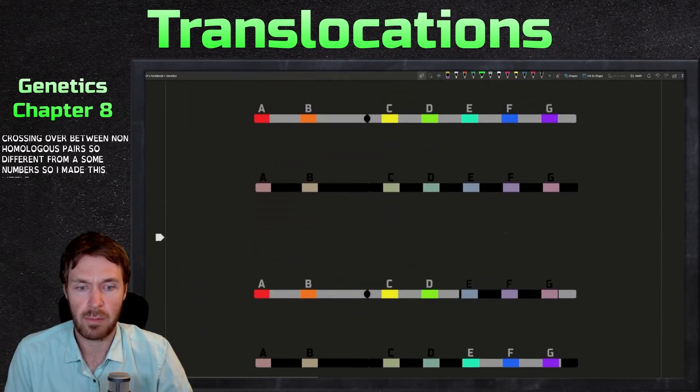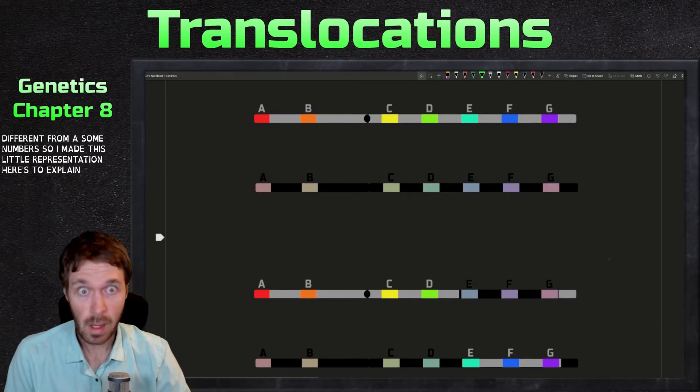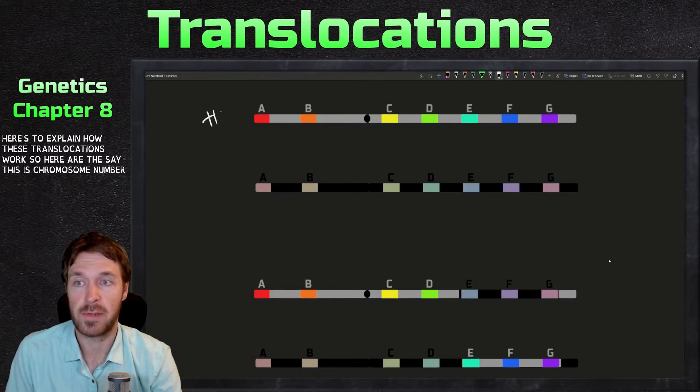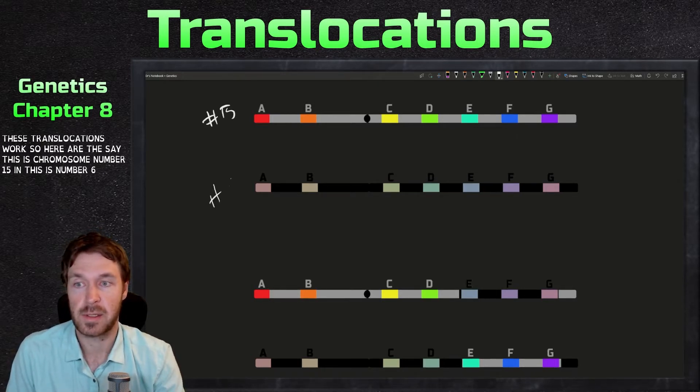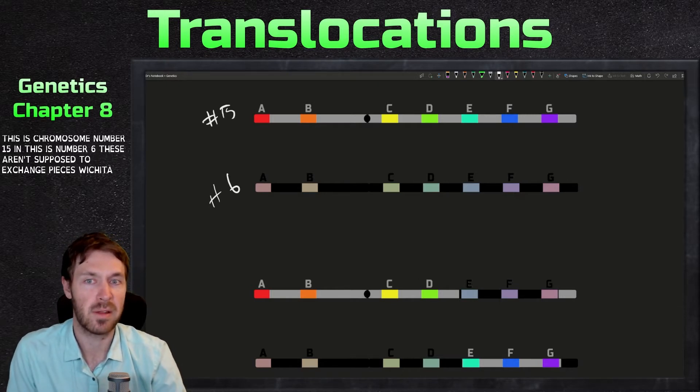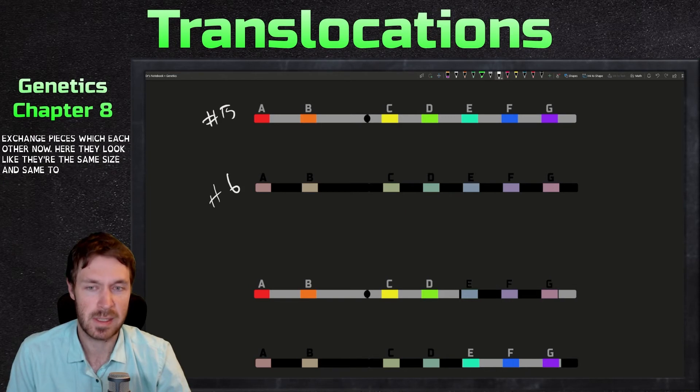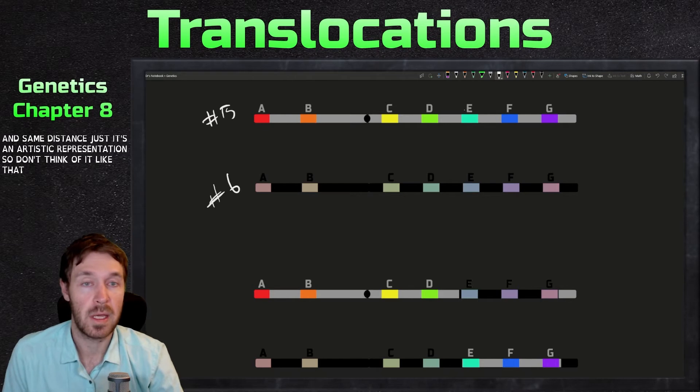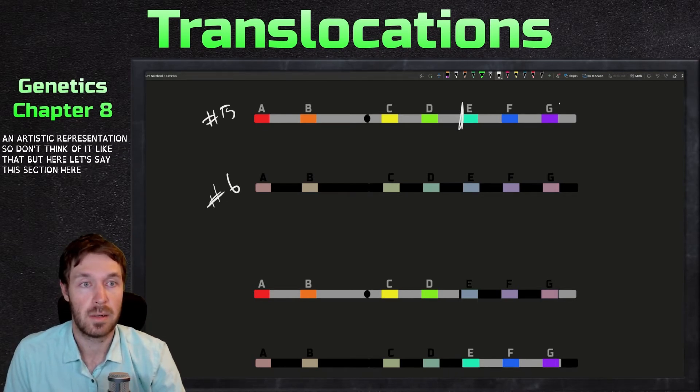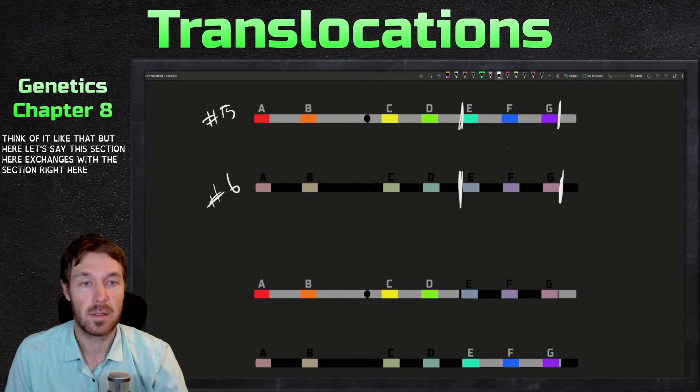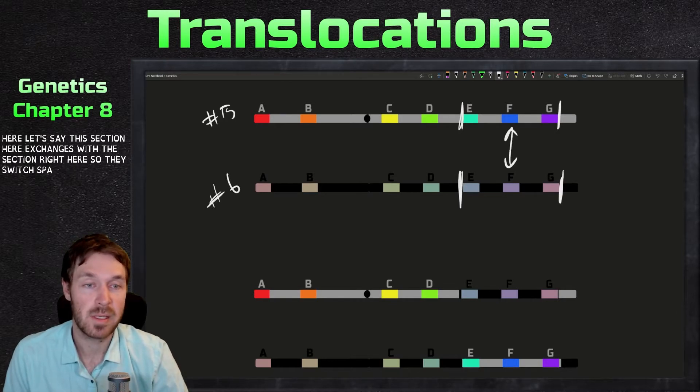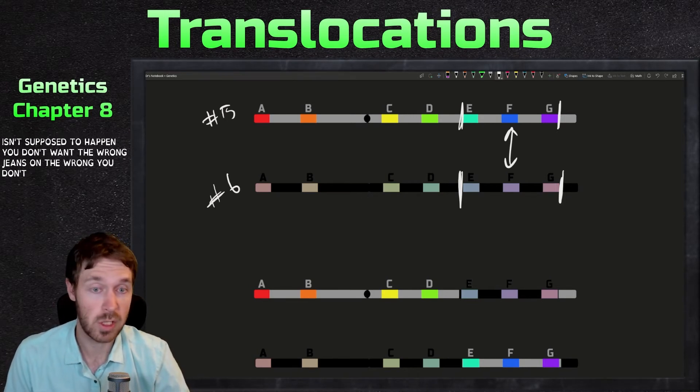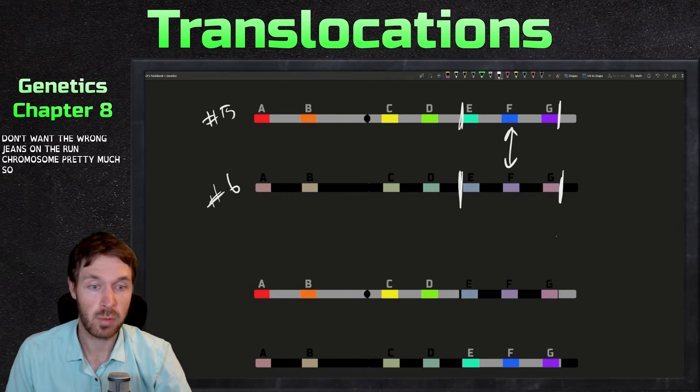So I made this little representation here to explain how these translocations work. So here, let's say this is chromosome number 15 and this is number six. These aren't supposed to exchange pieces with each other. Now here they look like they're the same size and same distance. It's just an artistic representation. So don't think of it like that. But here, let's say this section here exchanges with this section right here. So they switch spots and this isn't supposed to happen. You don't want the wrong genes on the wrong chromosome pretty much. So that's switching now.